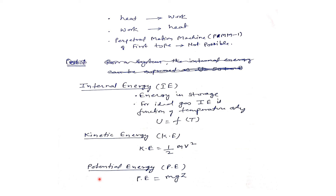The third form of energy is potential energy. Potential energy is due to the position of the particle — its gravitational energy. It can be expressed as PE = mgz, where g is the gravitational force and z is its position. Using this formula we can calculate the potential energy of a particle.